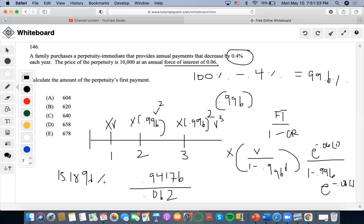Now X, now I'm going to set this equal to the price of the perpetuity, which is 10K. So let's find X. And now I'm going to divide by 15.189676. So X is going to be 658.345, which is going to be choice D. And here we go. Okay. Thank you.